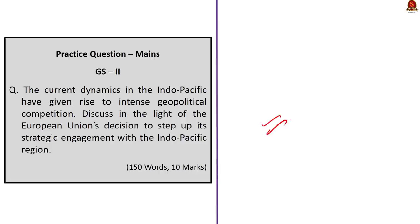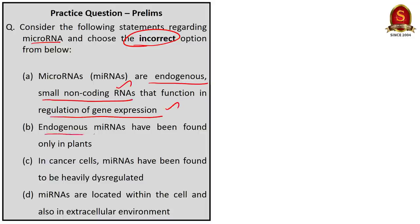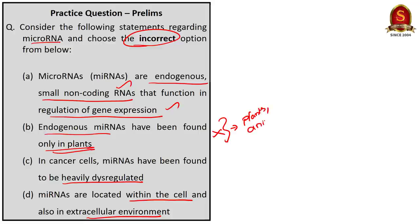Now let us take up the practice prelims questions. Consider the following statements regarding microRNA and choose the incorrect option. Statement 1: microRNAs are endogenous small non-coding RNAs that function in regulation of gene expression. Statement 2: endogenous microRNAs have been found only in plants. Statement 3: in cancer cells, microRNAs have been found to be heavily dysregulated. Statement 4: microRNAs are located within the cell and also in the extracellular environment. Statement 2 is incorrect because endogenous microRNAs have been found in various organisms including animals, plants, and viruses. The rest of the statements are correct. So the correct answer is option B.